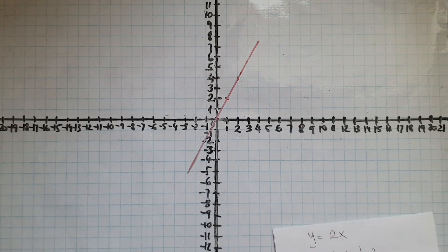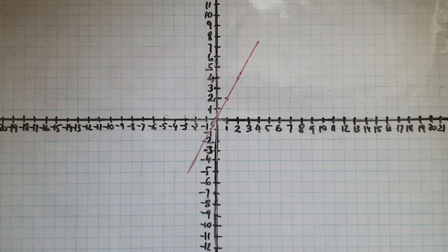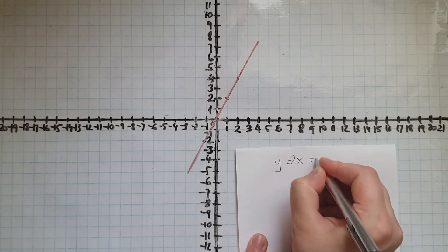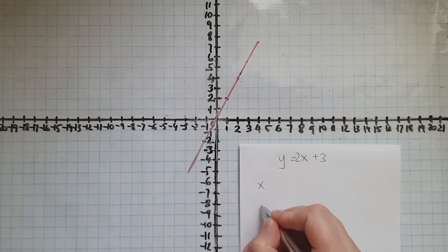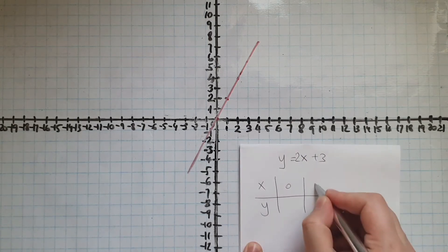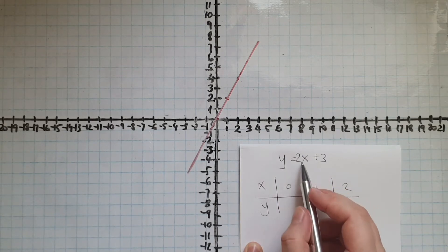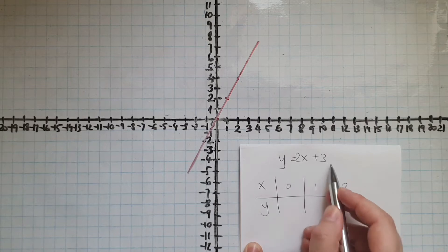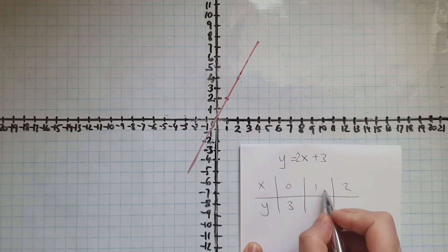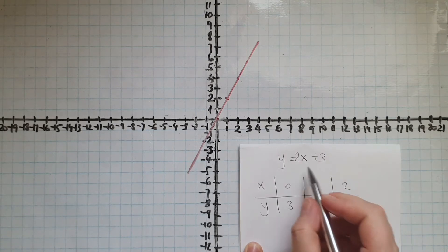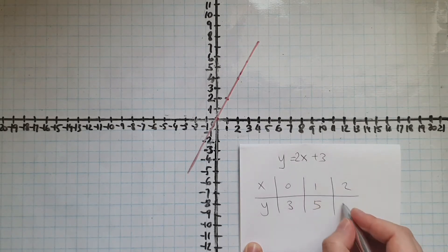Now we'll have a look at y equals 2x plus 3. Using the same x values of 0, 1, and 2: when x is 0, 2 times 0 is 0, add 3 gives us 3; when x is 1, 2 times 1 is 2, add 3 is 5; when x is 2, 2 times 2 is 4, add 3 equals 7.